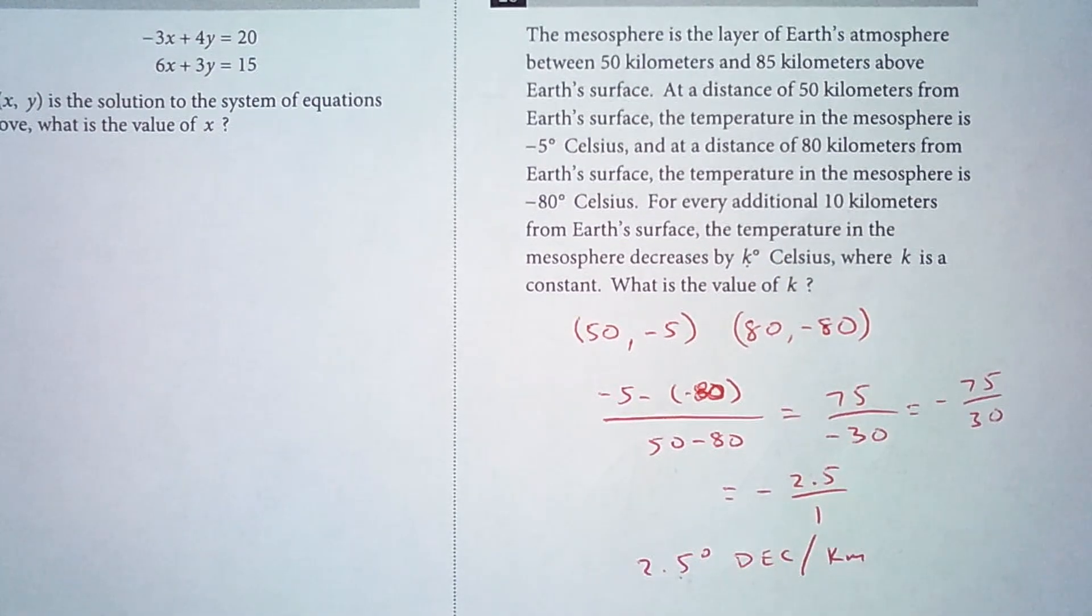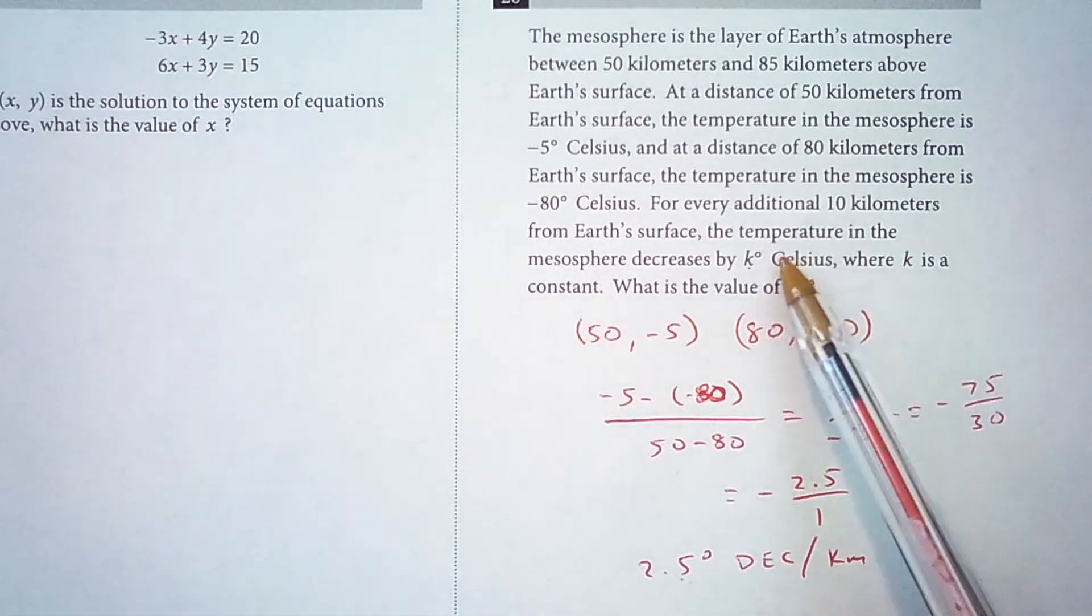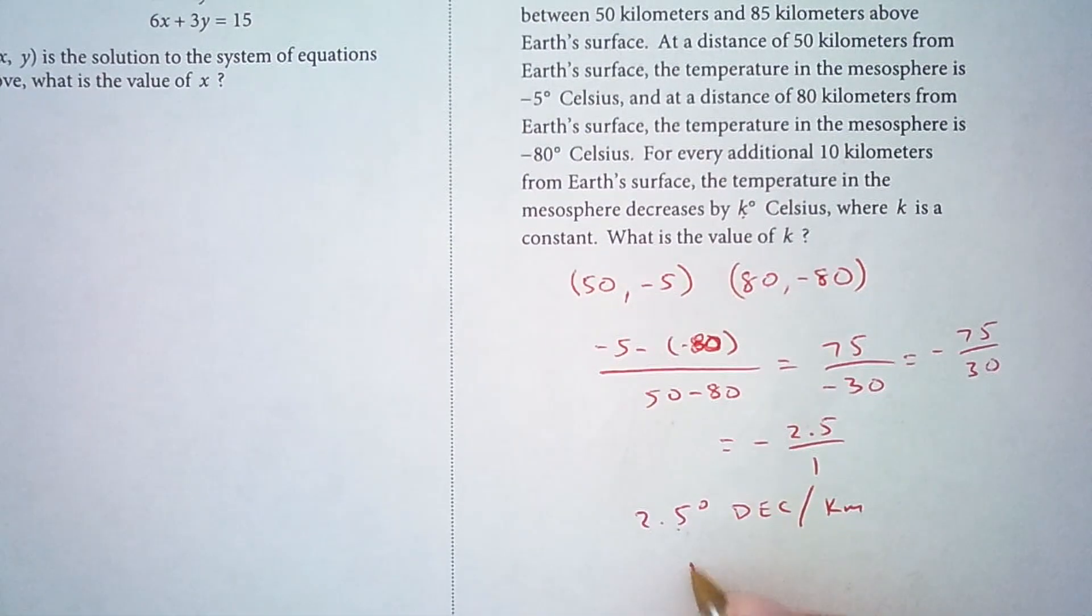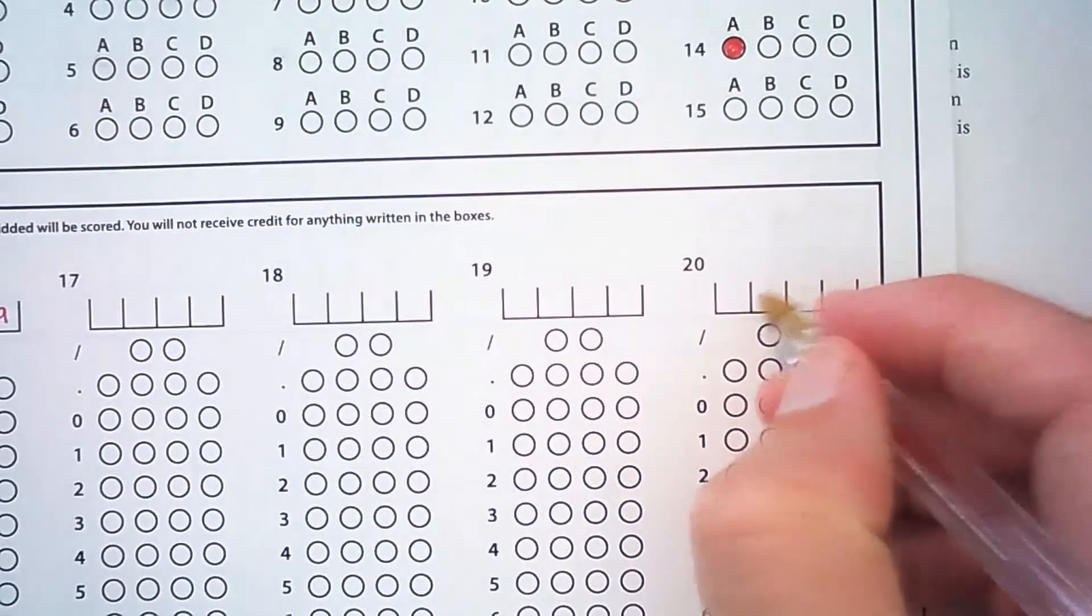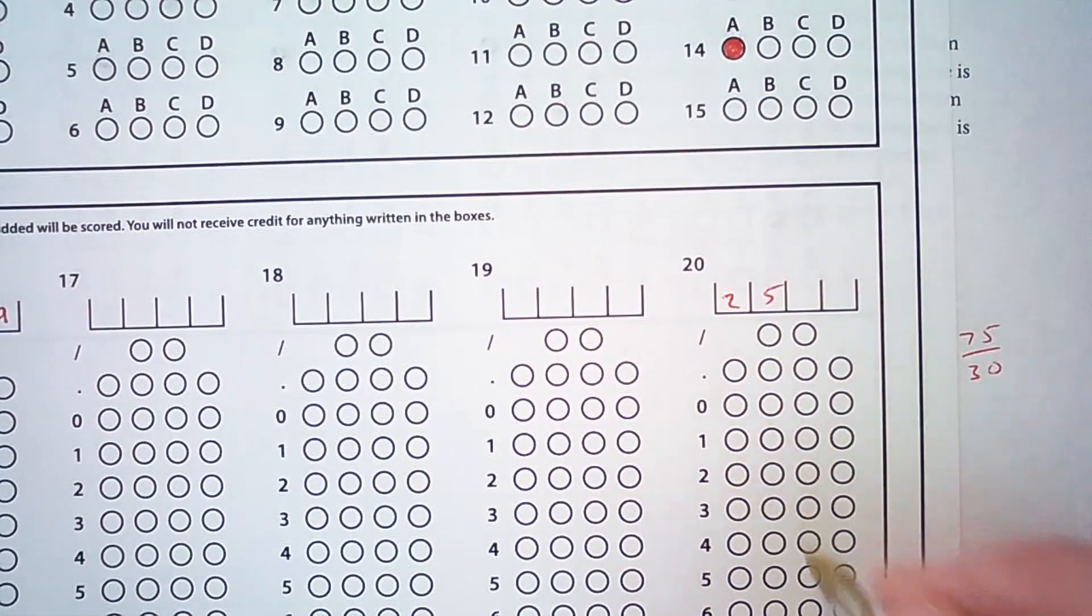So for one kilometer we're decreasing 2.5 degrees. For 10 kilometers we would multiply that by 10 and say that k is 25. So for number 20, we're going to put 25 in our grid.